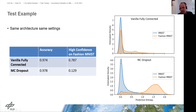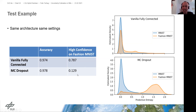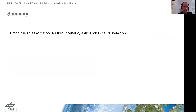Also, if we look at the predictive entropy, we can pretty clearly distinguish the two datasets. We could, for example, set a threshold at 0.5: every sample with a predictive entropy higher than 0.5 is handed back to a human expert, who then decides whether it's a handwritten digit or a fashion item — or, in the more serious case of the skin lesion example, the human expert would examine the photo of the skin lesion.